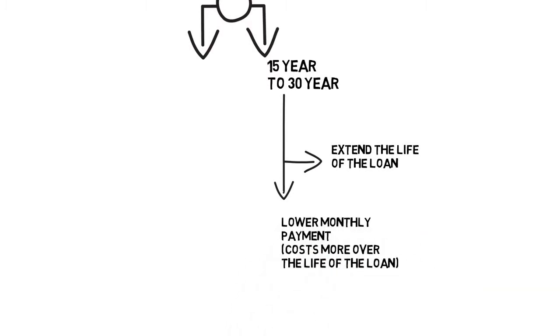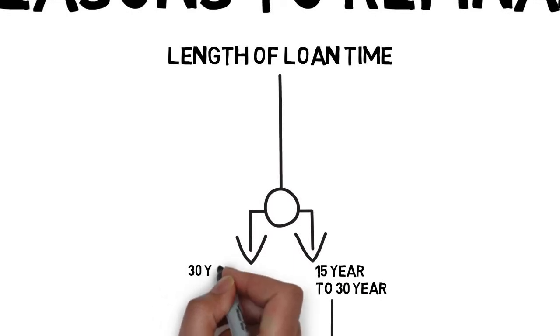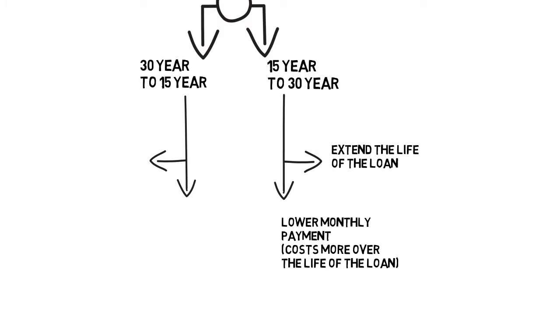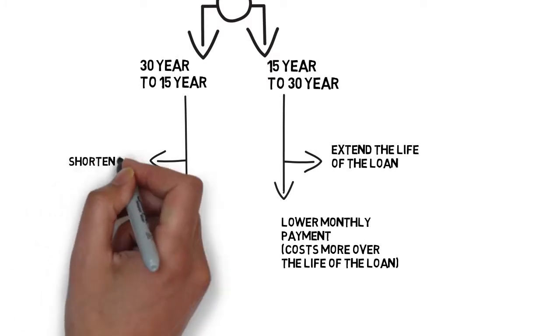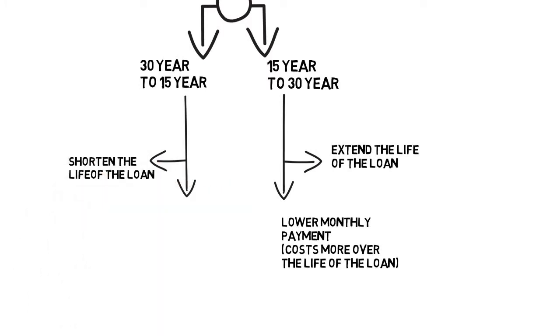Alternatively, you may be able to shorten the length of your loan. For instance, switching from a 30-year loan to a 15-year loan will make your monthly payment a little higher, but will save you a considerable amount of interest over the entire loan.